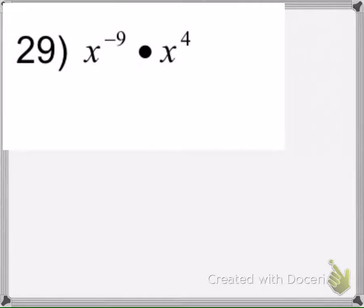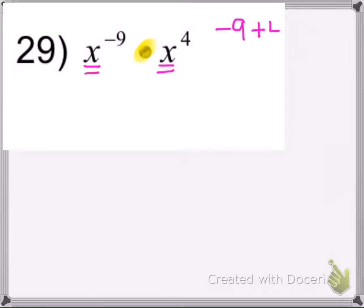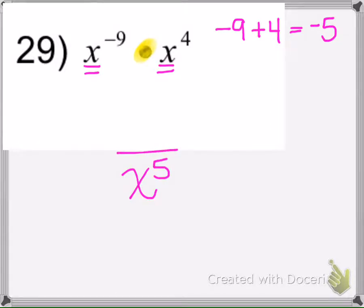Alright, if we look at example 29, there's more than one correct way to do this. When I first look at it I see this multiplication symbol, so I know the rule when we multiply is to add the exponents. Because the bases are the same, we add: negative 9 plus 4 is negative 5. When you get a negative exponent, it moves to the denominator, and if I have a denominator I need a numerator, so I'm going to put a 1 here.